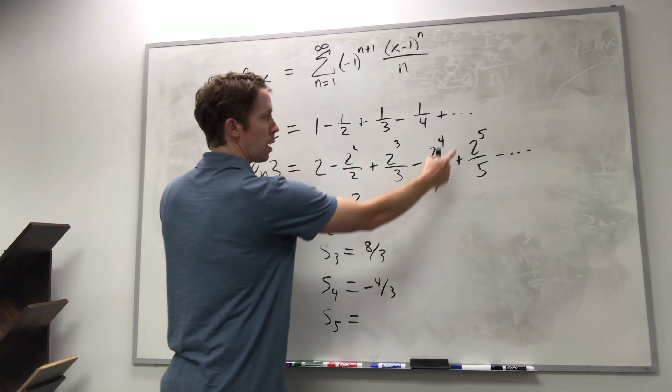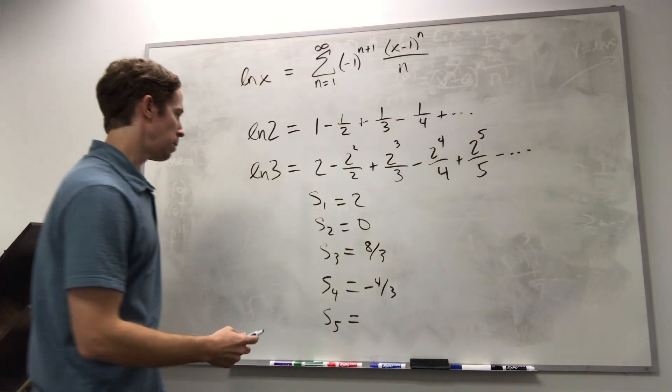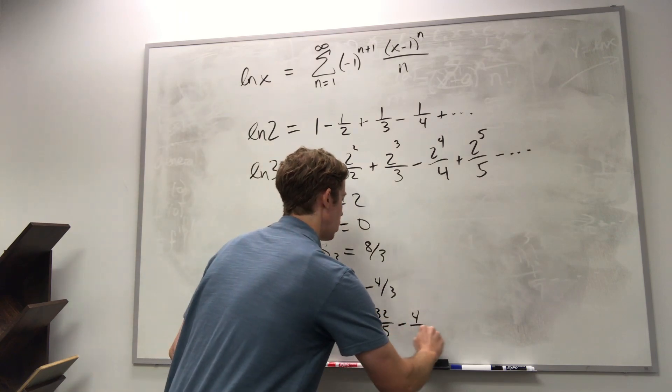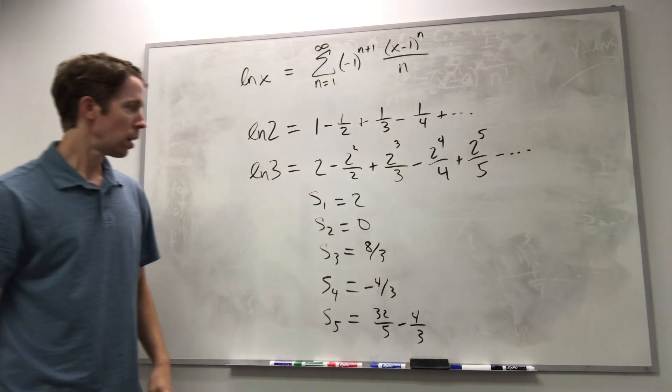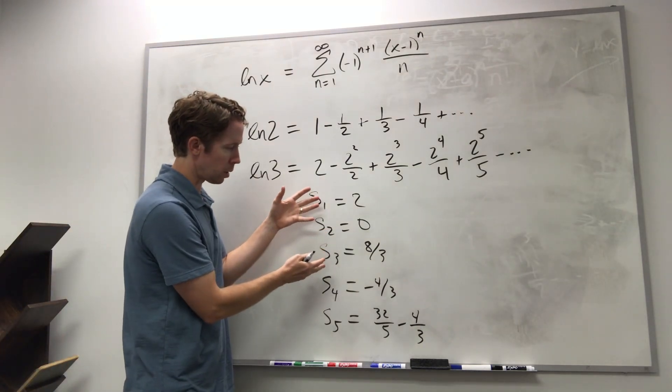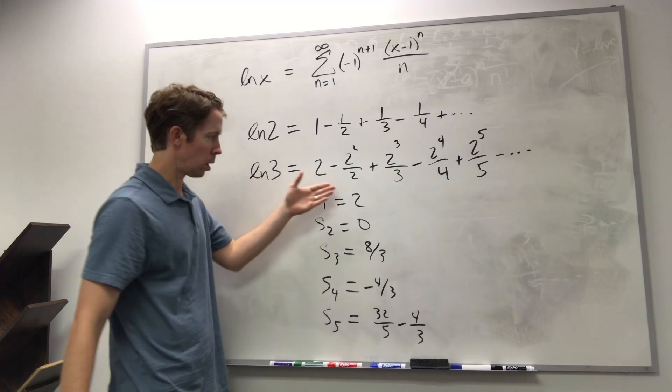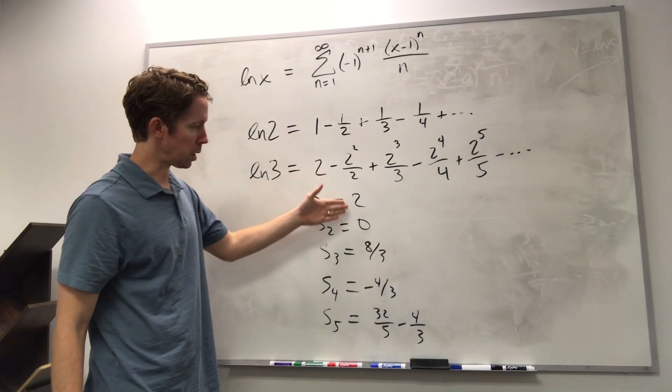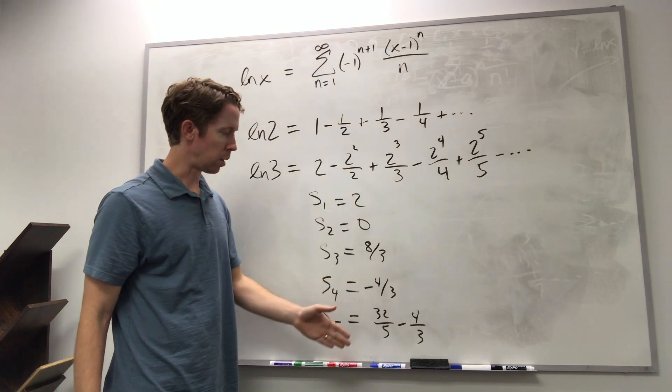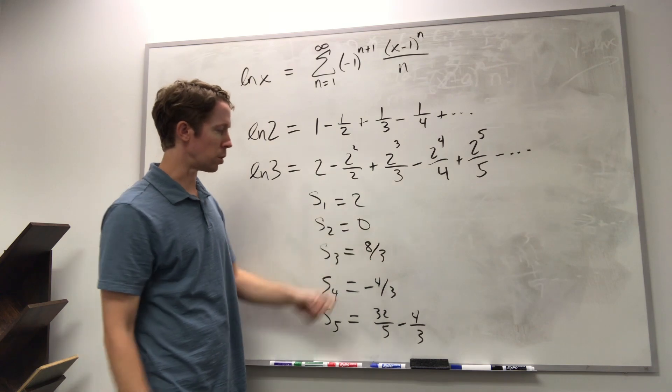Then S5 would take that and add thirty-two-fifths. I'm just going to write that as thirty-two over five minus four-thirds, and so on. And so what I want to point out here is that you have this alternating pattern where you've got positive, zero, positive, negative, positive.